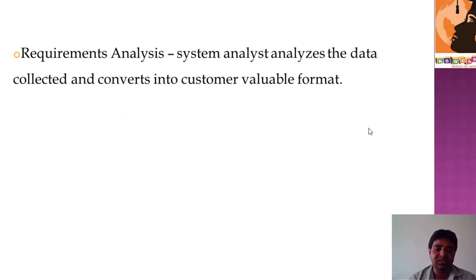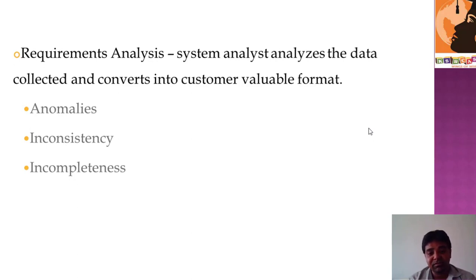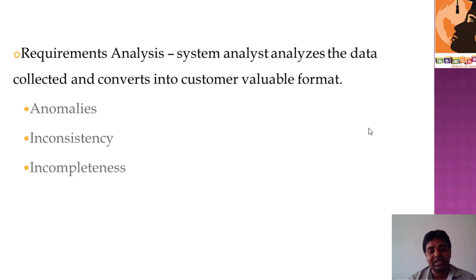Moving on to requirements analysis — the data collected by the system analyst gets converted into a valuable format, transforming raw data into useful data that the company can understand. Three challenges arise during analysis: anomalies, inconsistency, and incompleteness. Anomalies occur when a customer cannot clearly communicate requirements, leading to project failure. Inconsistency happens when a customer's idea changes from the start to the end of the project. Incompleteness arises when only partial data is shared.